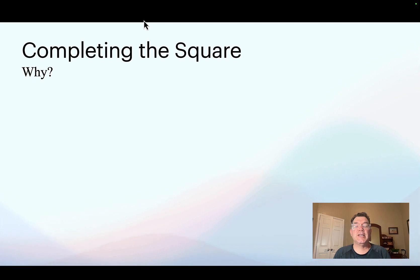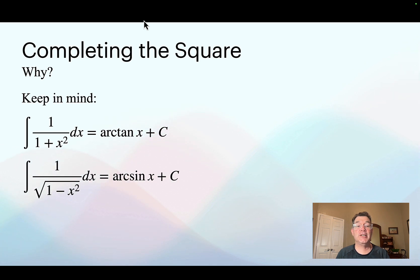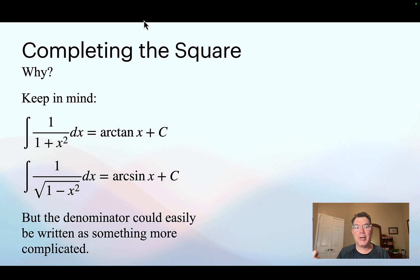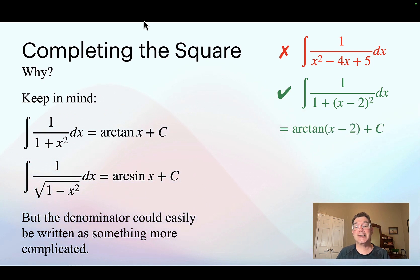Now, completing the square is another strategy that you might use. Why would we ever want to use it? Well, sometimes we have some integrands that will work out to be arctan or arcsine when you take the antiderivative. So if we've got a square in there, we want to complete that square and make it as solvable as possible. So something like 1 over x squared minus 4x plus 5, I really don't know just by looking at that what the antiderivative is. But if I change it to 1 over 1 plus x minus 2 squared, I know that the antiderivative of that is just going to be arctan of x minus 2 plus c.